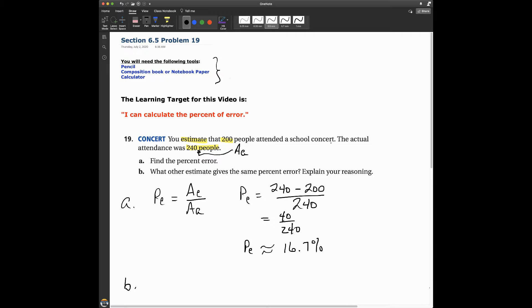So, there's a concert, and you estimate that 200 people attended the school concert. The actual attendance, the actual amount, is 240.